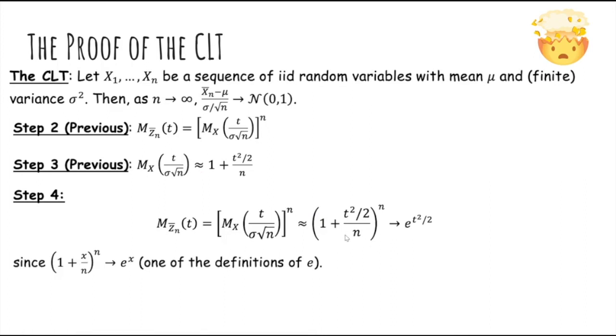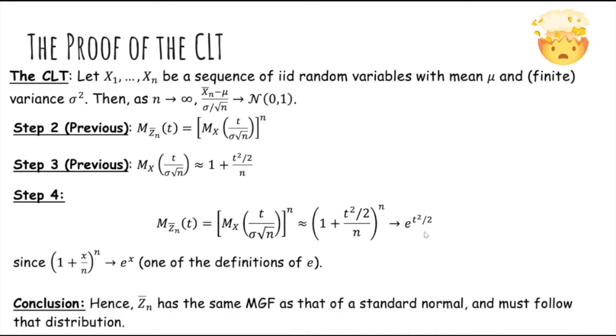Because of the definition of e, which says that (1 + x/n)^n approaches e^x, we can use this definition to get that this is e^(t²/2). And because this is the same MGF as that of a standard normal, therefore the standardized sample mean also has the same distribution as a standard normal because it has the same MGF.